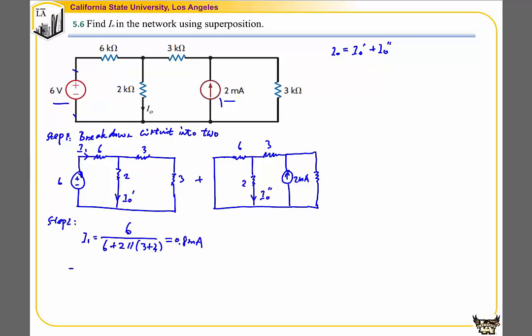Now we can find I0' by using the conclusion we got for the current divider. I0' equals 3 plus 3, the resistance in the other branch, over the overall resistance.